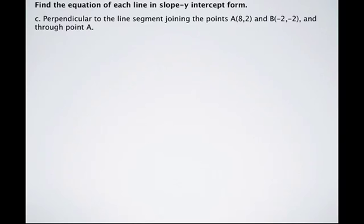In this question we're asked to find the equation in slope y-intercept form for a line that is perpendicular to the line segment joining the points A(8, 2) and B(-2, -2).